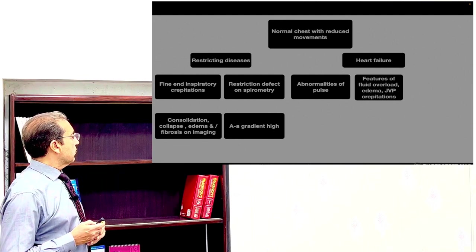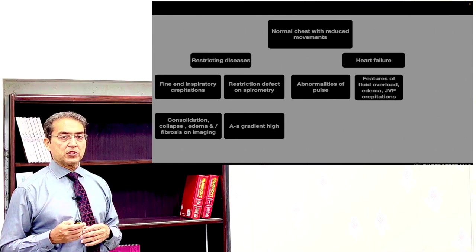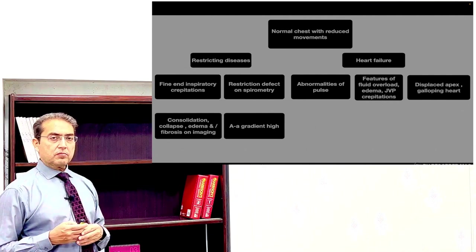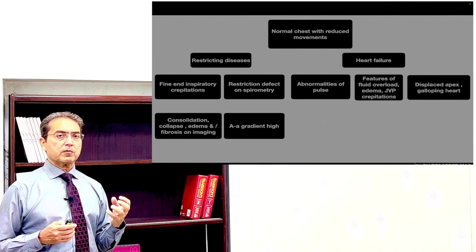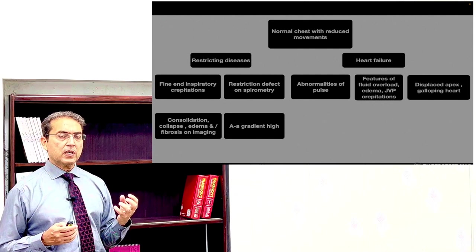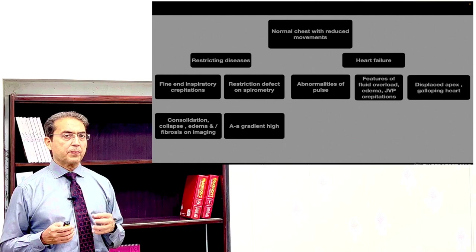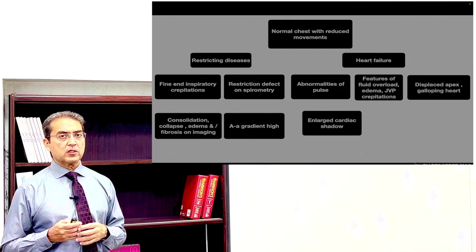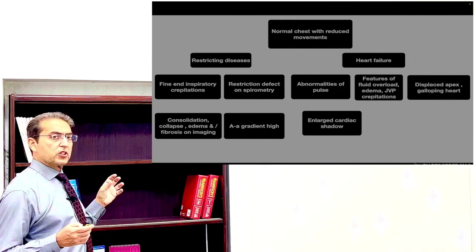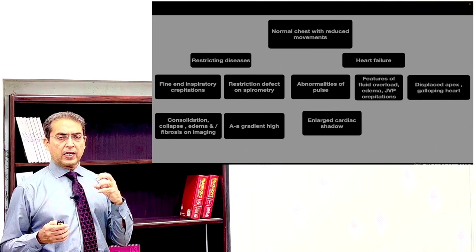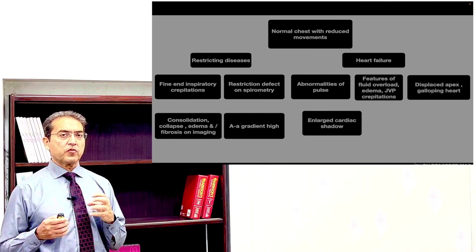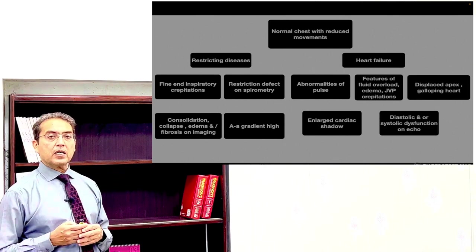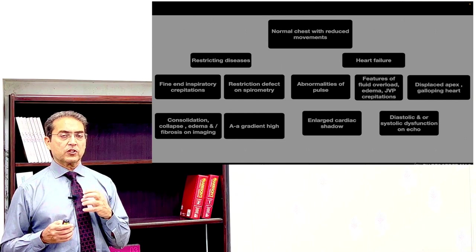The patient with heart failure may have fine end-inspiratory crepitations in the lung, sometimes very similar to the crepitations of pulmonary fibrosis. Precordial examination may reveal a displaced apex beat and an S3 or S4 gallop. Chest X-ray may show an enlarged cardiac shadow, especially in systolic dysfunction. In diastolic dysfunction, the cardiac shadow may be normal but features of vascular congestion may be present. Echocardiogram gives a good idea whether the patient has systolic or diastolic dysfunction or both.